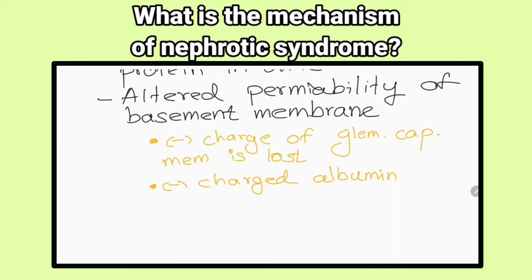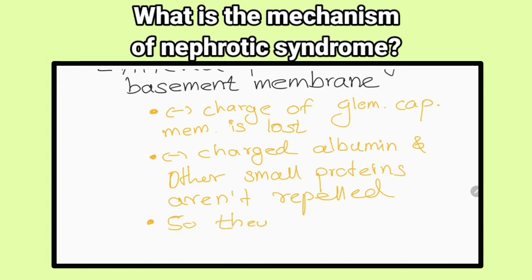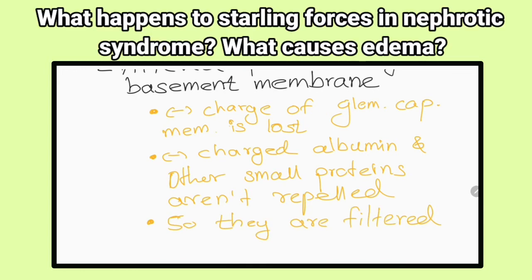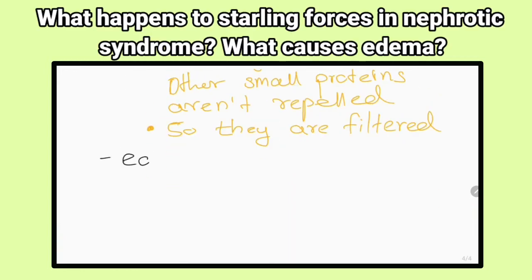In this condition, the negative charge of the glomerular capillary membrane is lost, so negatively charged albumin and other proteins are not repelled. They are filtered into Bowman's capsule. In nephrotic syndrome, what happens to Starling forces? What causes edema?